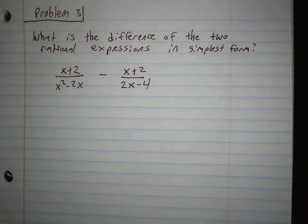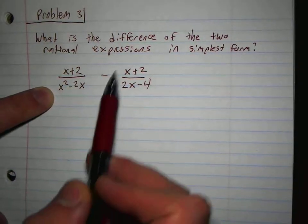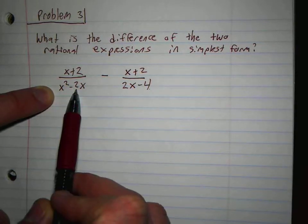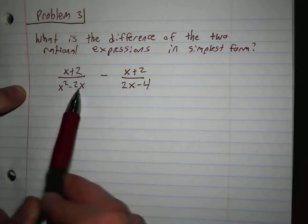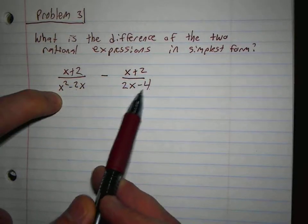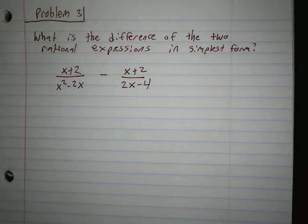On this problem, like I said before, if we wanted to, we have 2x minus 4 over here, x squared minus 2x over here. I could multiply everything over here by 2x minus 4, and then everything over here by x squared minus 2x. That's going to be a ton of distributing, and it's going to be really long. I don't want to show you that way again because it will confuse you.